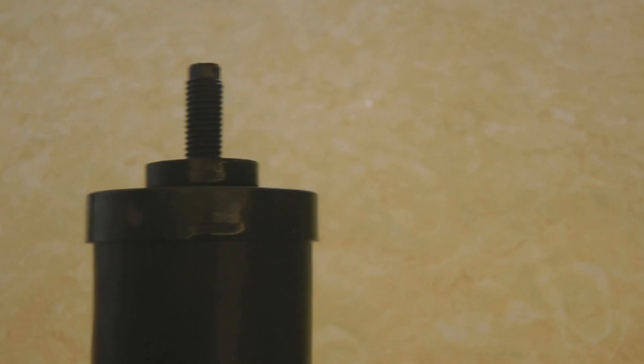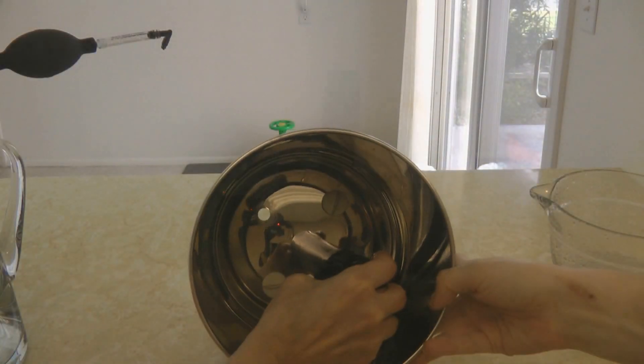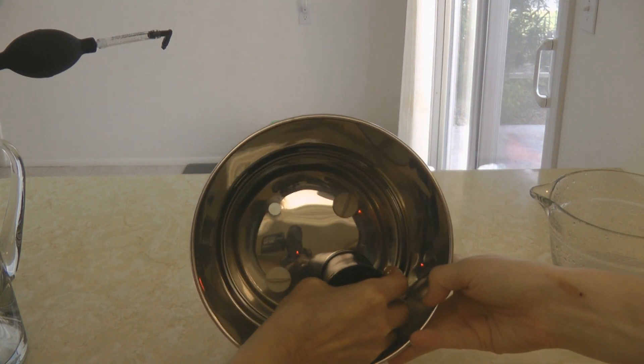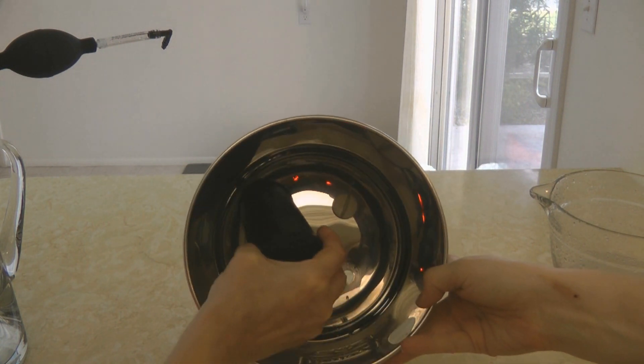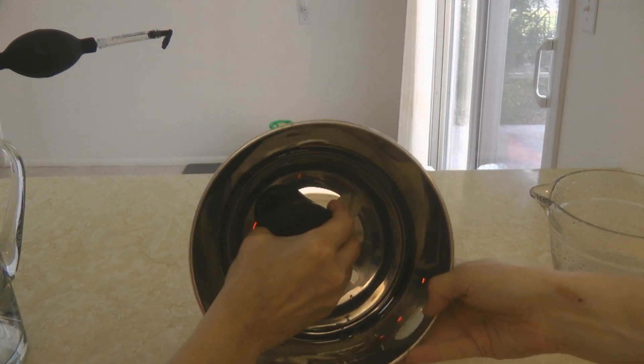Put the black washer onto your black filter, then you're going to insert it through the holes in the chamber. Then screw on the nut to hold it in place.